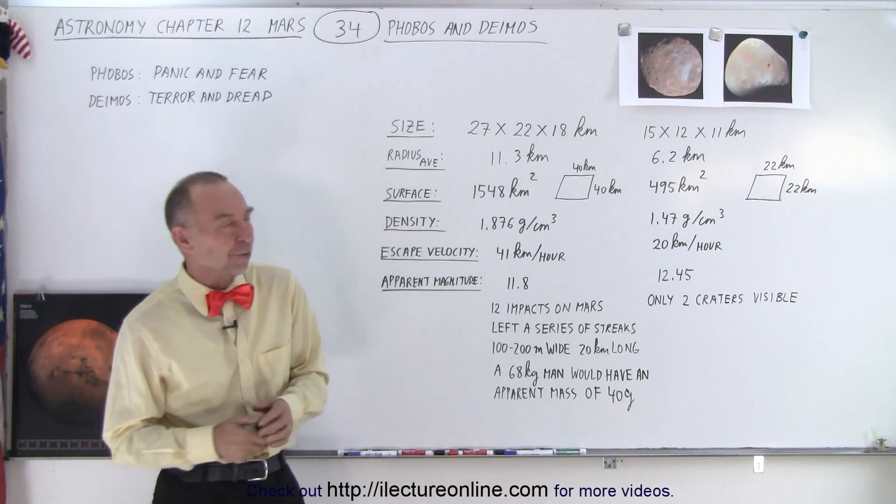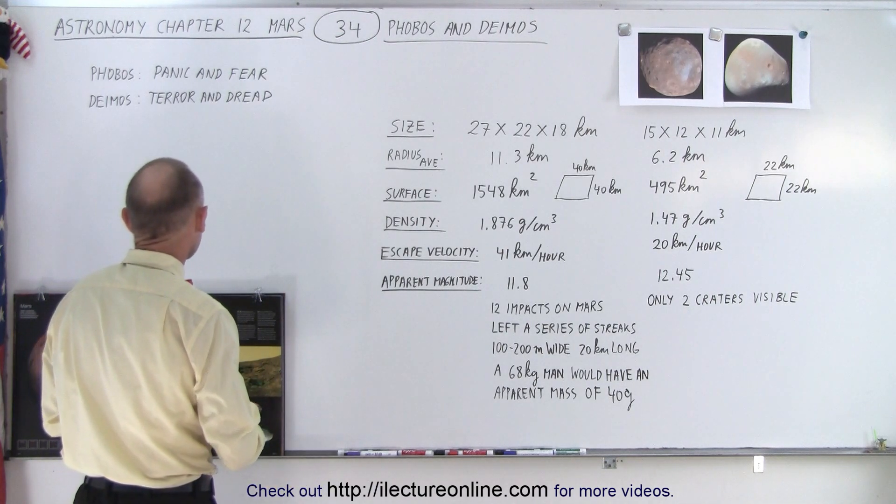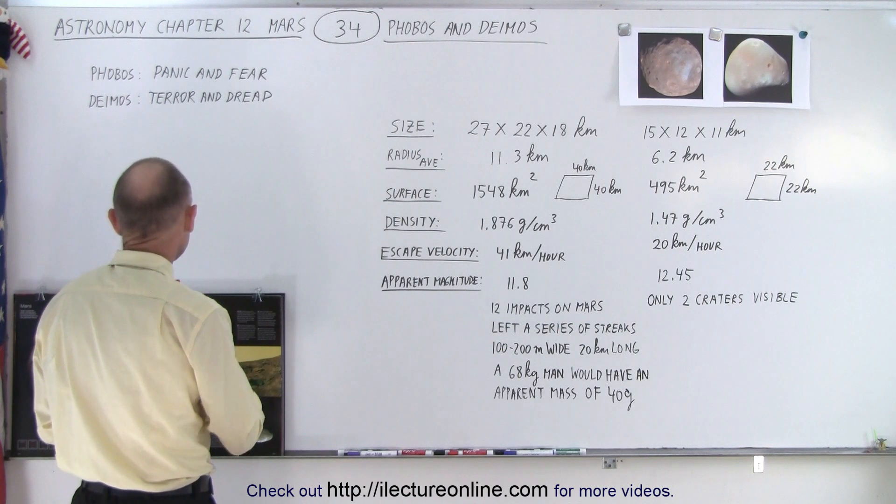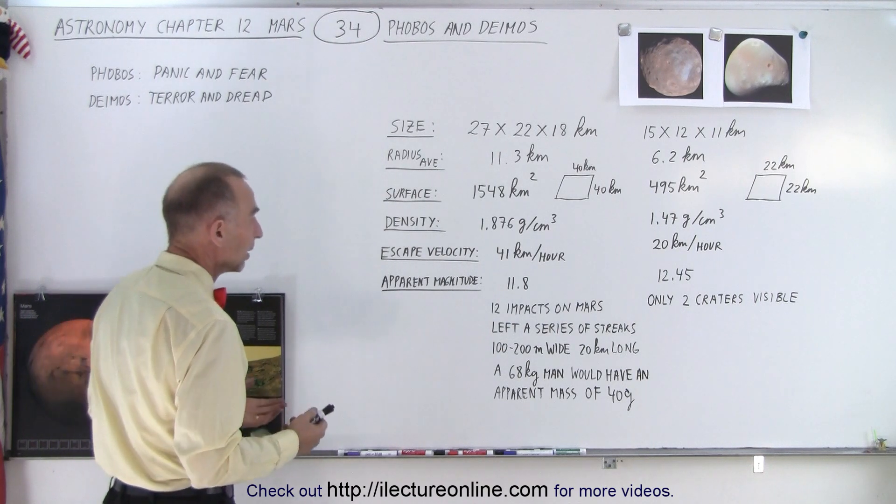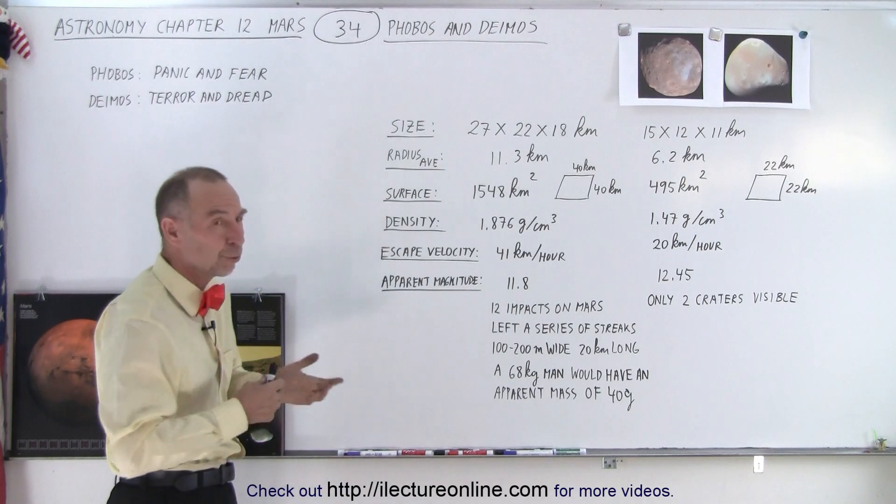First of all, their names came from Greek mythology. Notice that Phobos is considered to be panic and fear, and Deimos is terror and dread. They were joining their father in battle on the battlefield, the god of war.